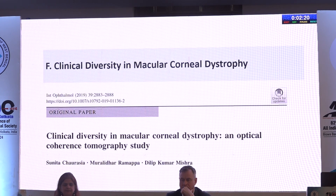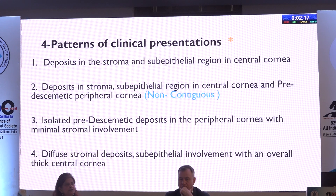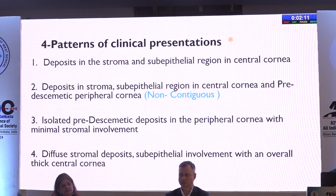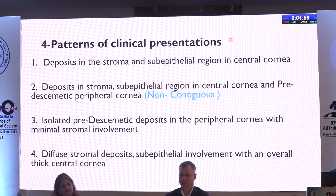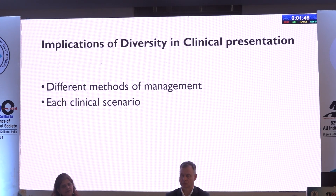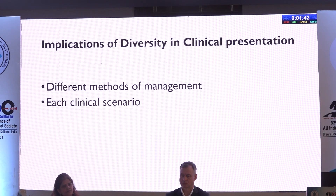There is considerable clinical diversity in macular corneal dystrophy. We identified four clinical patterns: deposits in the stroma and sub-epithelial region of the central cornea; deposits in the stroma and sub-epithelial central cornea plus pre-Descemet's peripheral cornea that are non-contiguous; isolated pre-Descemet's deposits in the peripheral cornea with minimal stromal involvement; and diffuse stromal deposits with sub-epithelial involvement in an overall thick cornea indicating endothelial compromise. Each of these presentations has implications for the choice of surgery and must be dealt with carefully.